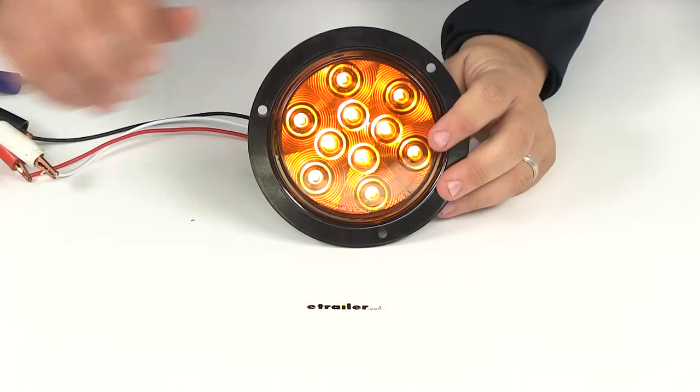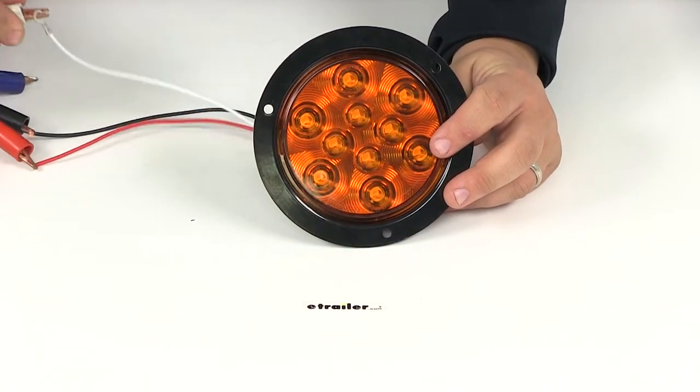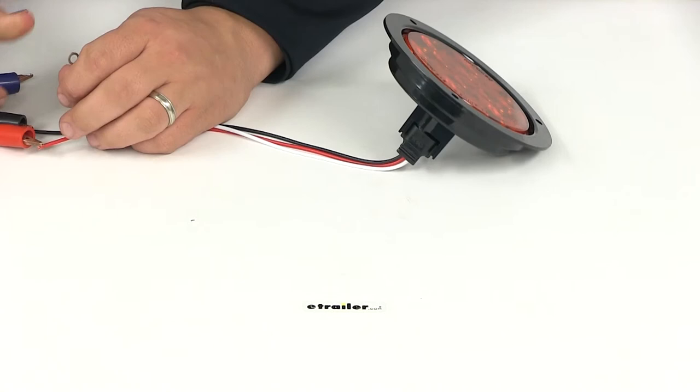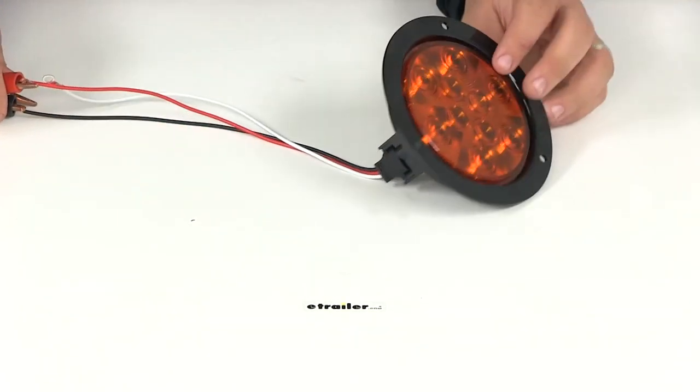That's going to do it for our review of part number STL42AB. This is the sealed four-inch round amber LED trailer light from Optronics.